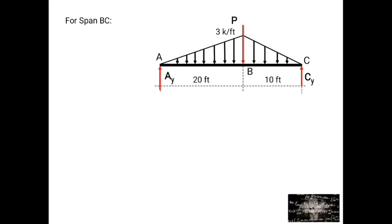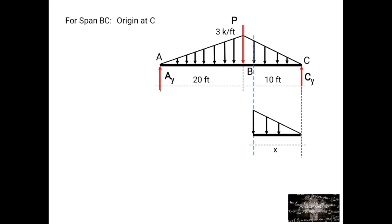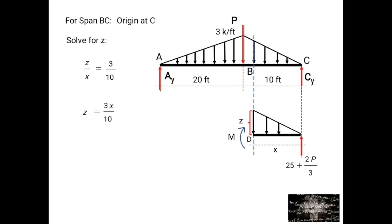For span BC, the origin is at C. We cut segment BC at a distance X from point C, with reaction 25 plus 2P over 3. We have point D and the internal moment at D. We solve for intensity Z: Z over X equals 3 over 10, so Z equals 3X over 10.